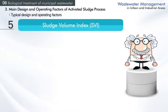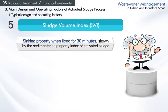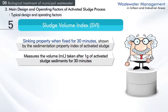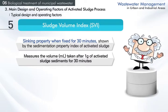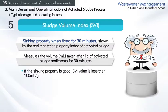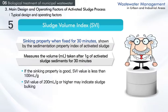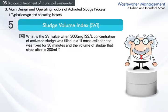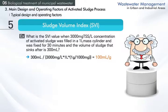Sludge volume index (SVI) is an index that shows the sedimentation property of activated sludge, expressing the degree of sinking when activated sludge is settled for 30 minutes. It is calculated by measuring the volume taken after 1 gram of activated sludge sediments for 30 minutes. If the sinking property is good, SVI is less than 100 mL/g, and an SVI of 200 mL/g or higher may indicate sludge bulking. For example, with 3,000 mg TSS/L concentration in a 1-litre cylinder fixed for 30 minutes, SVI can be calculated as 100 mL/g.